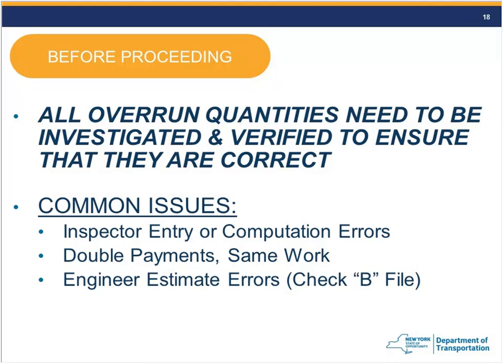If entries are verified correct, there may simply be an engineer's estimate error. Check all DWR entries, confirm no double payments, and then review the engineer's estimate — sometimes called the B file — for errors. If there was a design error, that must be verified before using the canned 'design error' explanation in Site Manager.